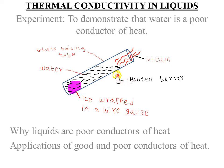Water is heated at the top of the glass tube. It is observed that the water boils at the top of the glass tube, producing steam, while the ice wrapped in the wire gauze at the bottom of the glass tube remains unmelted.